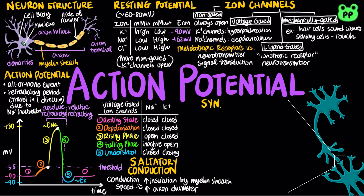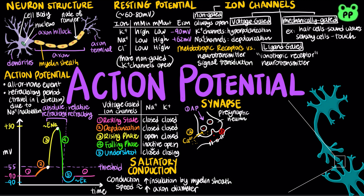Neurons communicate with other cells at synapses, which takes place in five steps. First, an action potential arrives, depolarizing the presynaptic membrane. Second, the depolarization opens voltage-gated channels, triggering an influx of calcium ions. Third, the elevated calcium ion concentration causes synaptic vesicles to fuse with the presynaptic membrane, releasing neurotransmitter into the synaptic cleft. Finally, the neurotransmitter binds to ligand-gated ion channels in the postsynaptic membrane, which can allow specific ions to diffuse across.